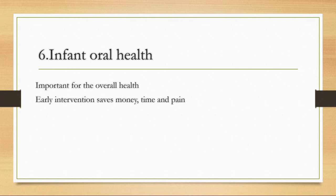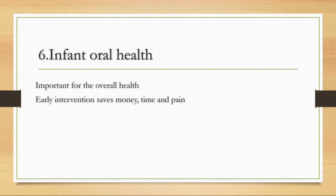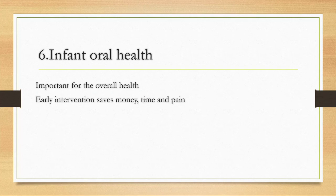Regarding infant oral health and its importance for general health: teeth that are well cared for early in life mean fewer problems when the child becomes an adult. Prevention saves money, time, and pain. A caries intervened at an early stage is a small cavity that can be easily filled without pain; without intervention, it progresses to dentin, pulp, and periapical infection, and can also affect the permanent tooth bud, complicating things further.